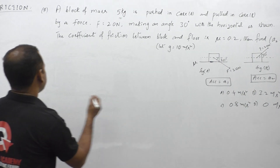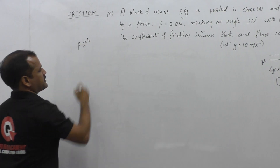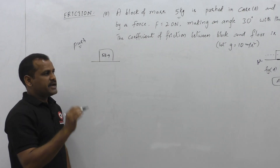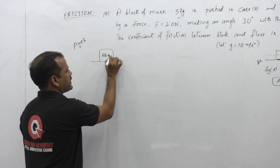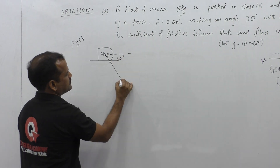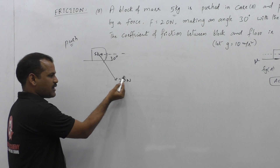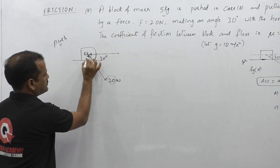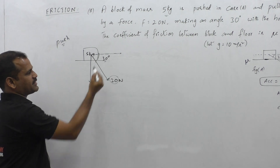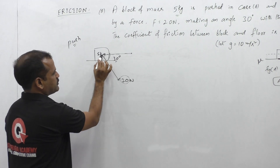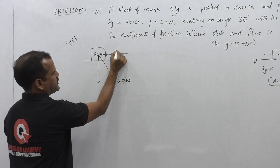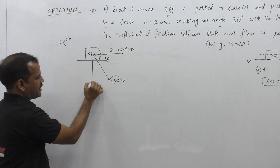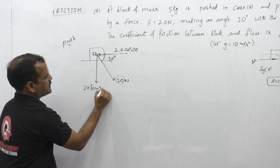First, consider the pushing case: a 5 kg block on a horizontal surface with a force applied at 30 degrees to the horizontal. Resolving the 20N force, the horizontal component is 20 cos30 = 10√3 N, and the perpendicular (vertical) component is 20 sin30 = 10N downward.